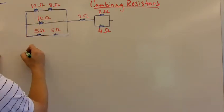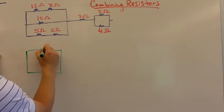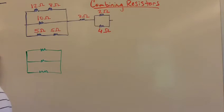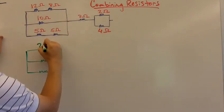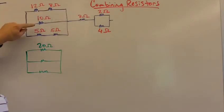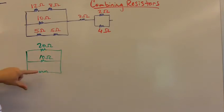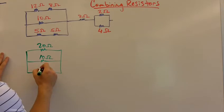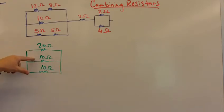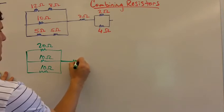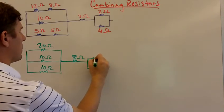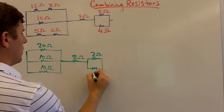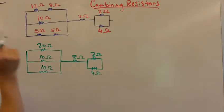First thing we're going to do is redraw this. We're going to combine these resistors - since they're in series we add them together. So 20Ω is the resistance of this line, here by itself is still 10Ω, and down here 5Ω and 5Ω is 10Ω. So we have 20Ω, 10Ω, 10Ω, and over here we still have 8Ω. And over here we still have 2Ω and 4Ω.